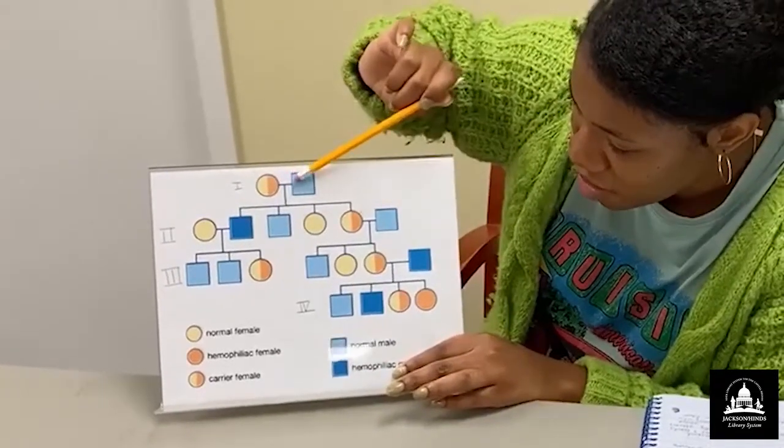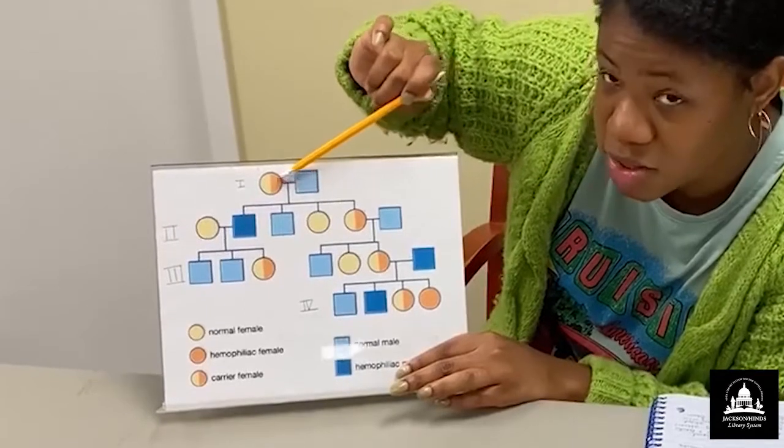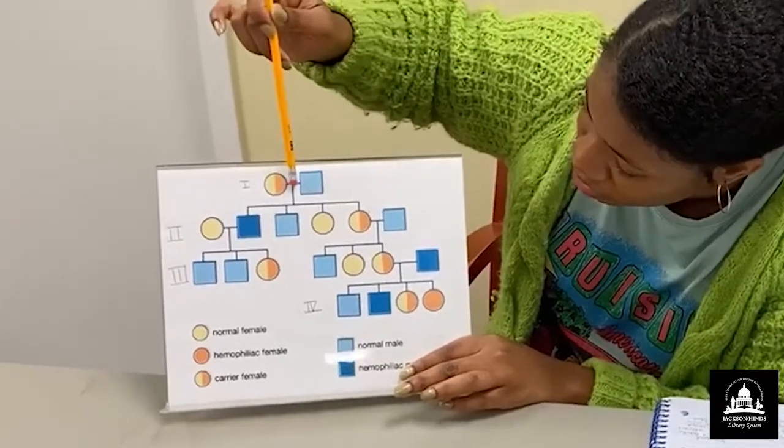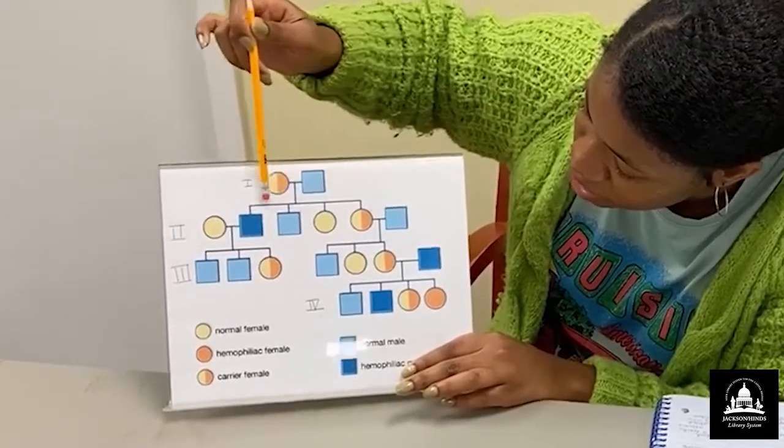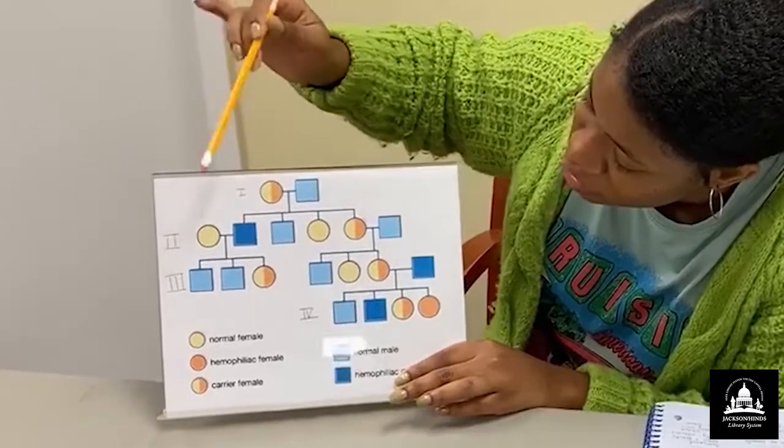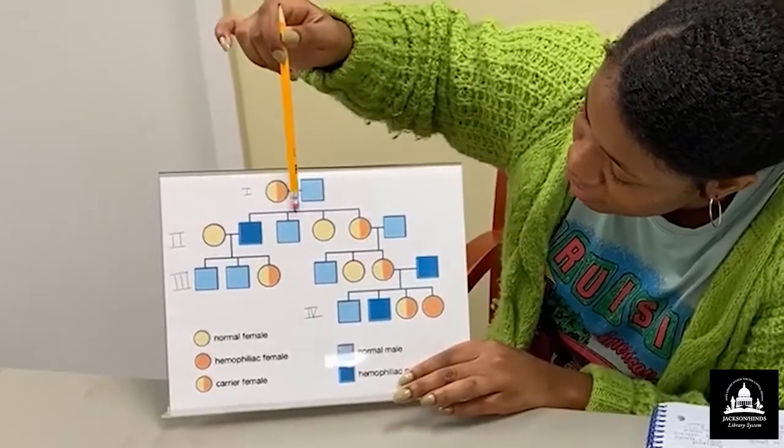We have a female. We have a male. We have a horizontal line showing that they have a marriage. All right. We have a vertical line bridging to a bracket. So we're going to follow these lines.